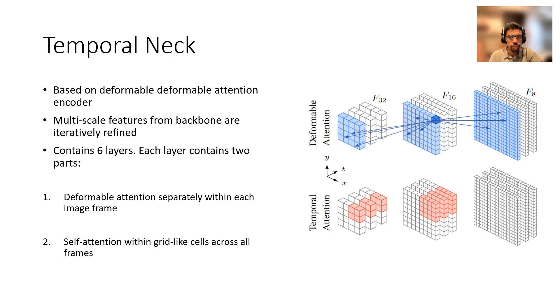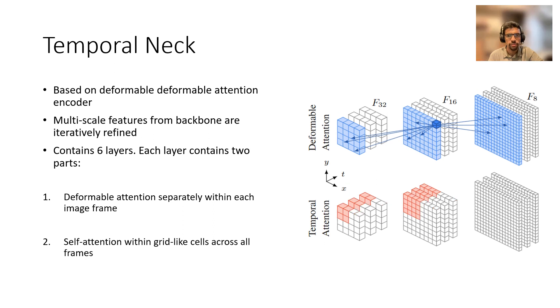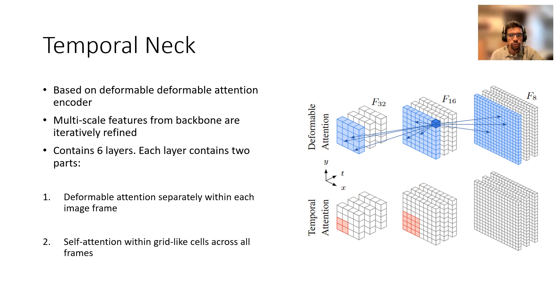The second part is our proposed temporal component. We divide the spatiotemporal feature volume into a grid along the spatial dimensions and then apply self-attention separately within each grid cell. So in the example shown, all the pixel features highlighted in red attend to each other. Likewise, there are three other grid cells within which we apply self-attention.